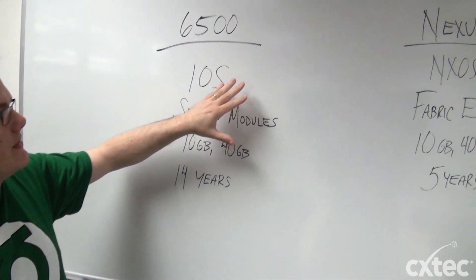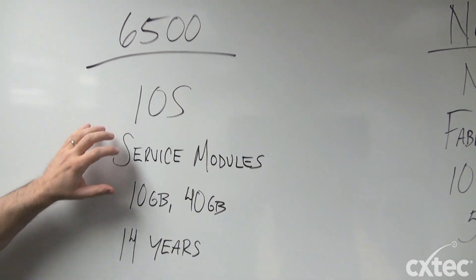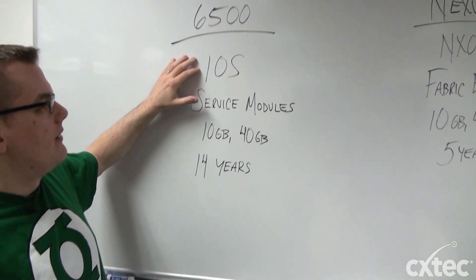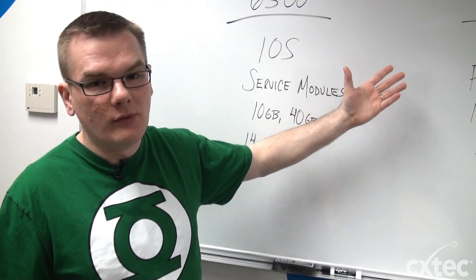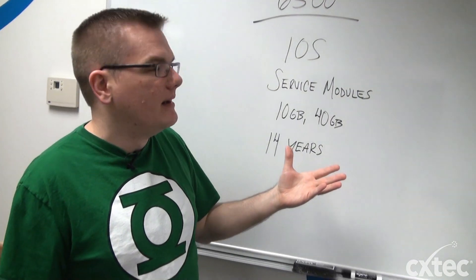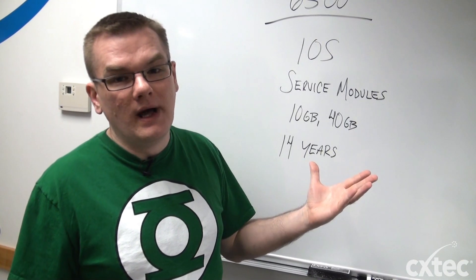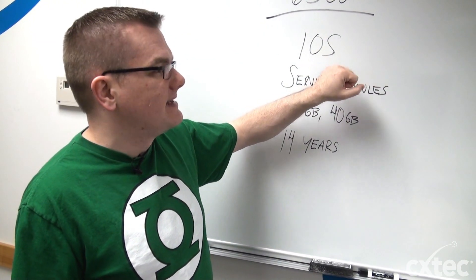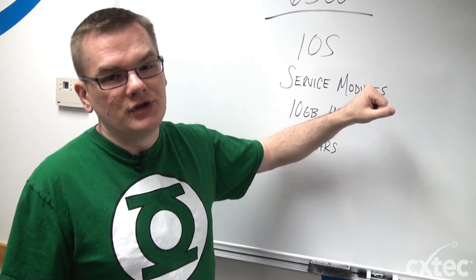We'll start on the 6500 side. If you have a 6500, a lot of these features and things are going to be very familiar to you. Right at the top of the list is the iOS. The 6500 iOS is something that's tried and true — it's been around a long time and everyone's very familiar with it. You know how powerful the iOS really can be. There are a lot of different features and functions that it has that other operating systems do not, and it also has some proprietary things. At the same time, it brings a lot of the power to the table that any great switching platform will.